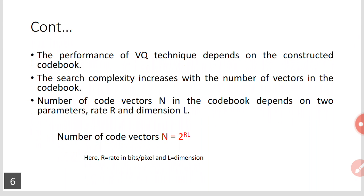The performance of vector quantization based image compression depends on the constructed codebook. The search complexity increases with the number of vectors in the codebook — when there are more code vectors, you must find distortion with all of them for each input vector, so complexity increases.